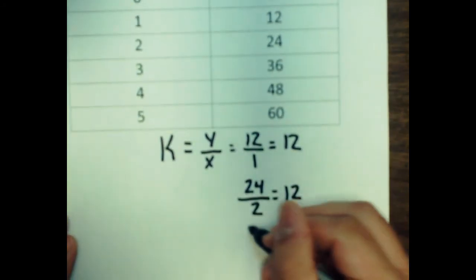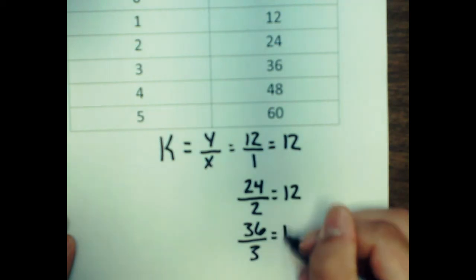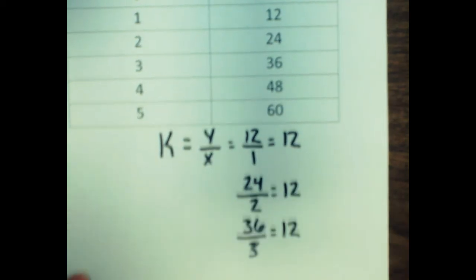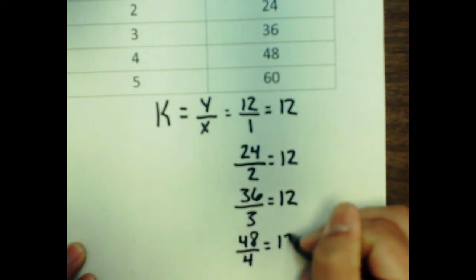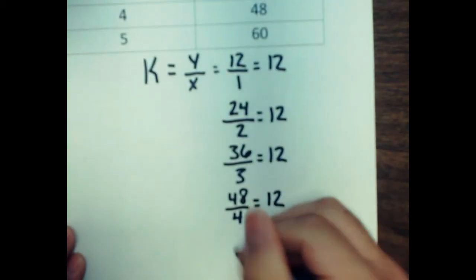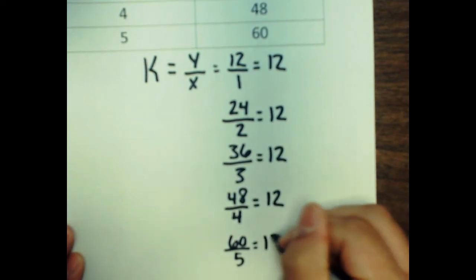So we're going to go ahead and try 36 divided by 3, that is also 12. Take 48 divided by 4, which is also 12. And last but not least, 60 divided by 5, which also gives us 12.